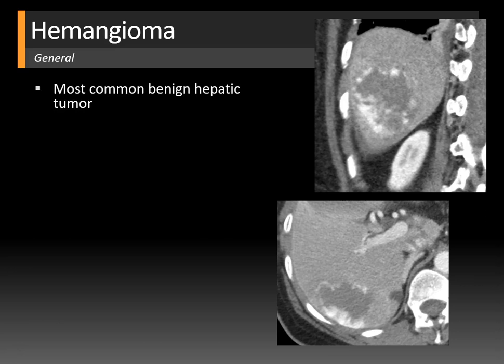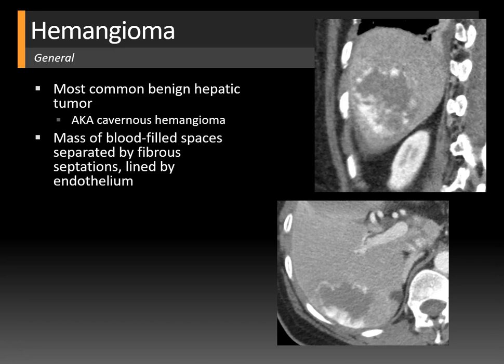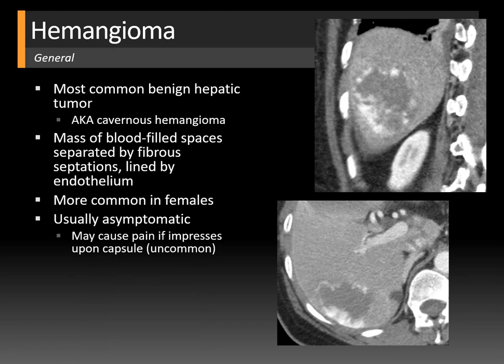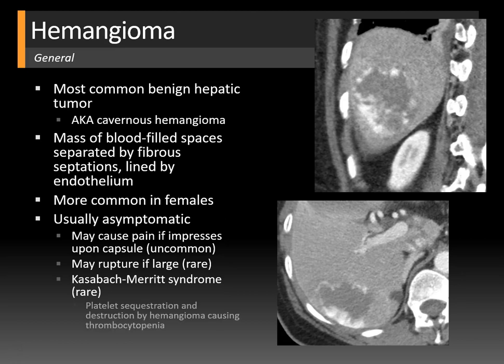Hemangiomas are the most common benign hepatic tumor, also known as cavernous hemangiomas. They are a mass of blood-filled spaces separated by fibrous septations and lined by endothelium. They're more common in females and usually asymptomatic, though large hemangiomas may impress the hepatic capsule causing pain, rarely rupture causing hemoperitoneum, or cause Kasabach-Merritt syndrome with platelet trapping and thrombocytopenia.